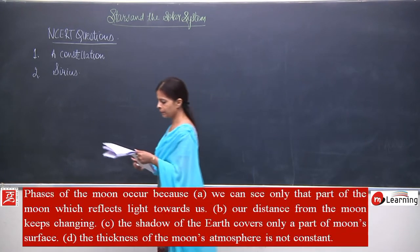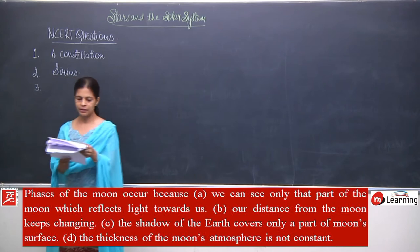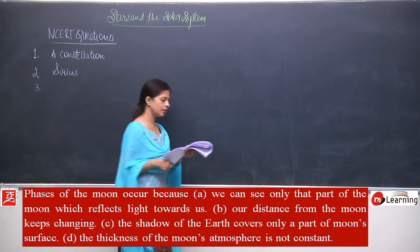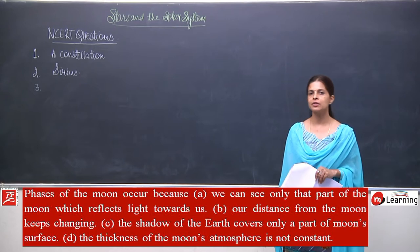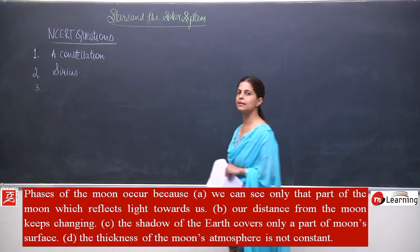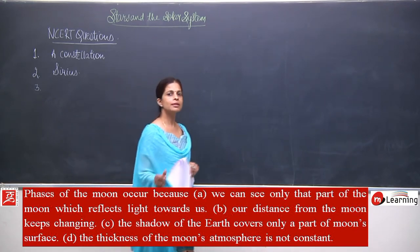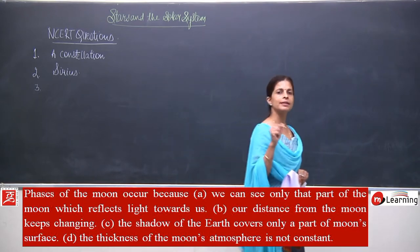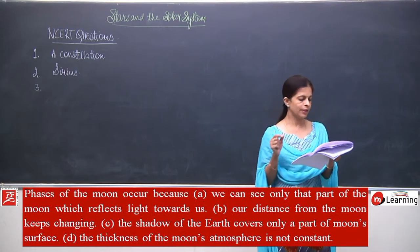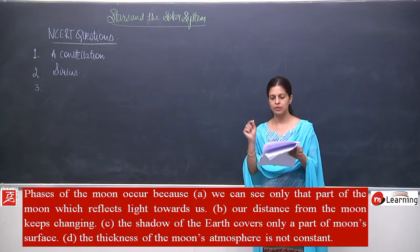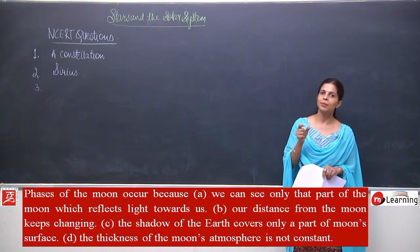Now we move to question number 3. The phases of the moon occur because we can see only that part of the moon which reflects light towards us. This is very correct — we have studied the phases of the moon. We are able to see the moon only when sunlight reaches it, gets reflected, and reaches us.